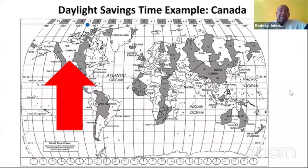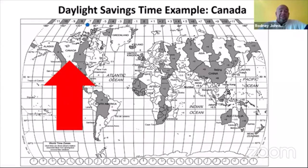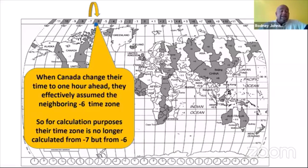Let's use Canada as an example. Canada is on the minus seven time zone — place your marker on the time zone ruler accordingly. Normally, Canada would be minus seven. But when Canada practices Daylight Savings Time, they move their clocks one hour ahead and effectively assume the neighboring minus six time zone. So for all calculation purposes when Canada is in Daylight Savings Time, you use minus six for Canada, not minus seven.